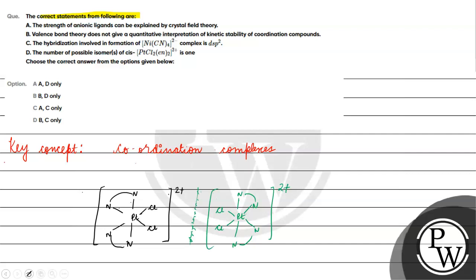So PtCl2(en)2(2+) isomers - two isomers are possible, not one, okay? Option D is incorrect.